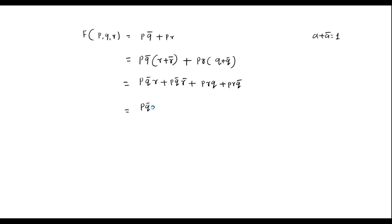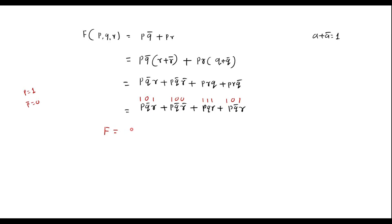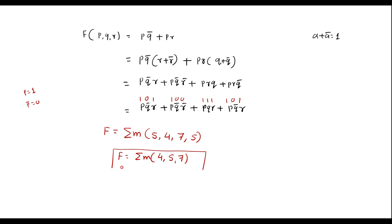Writing in order: pqr̄, pq̄r, pqr, pq̄r. Now representing in min term notation: in min terms, the normal variable = 1, complemented variable = 0. So pq̄r gives 1,0,1 = 5; pq̄r̄ gives 1,0,0 = 4; pqr gives 1,1,1 = 7; pq̄r gives 1,0,1 = 5 again. Writing in ascending order and removing duplicates: f = Σm(4, 5, 7). This is the min term notation for the given Boolean function.